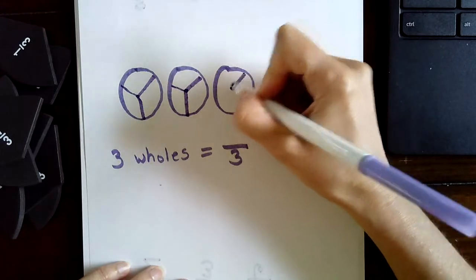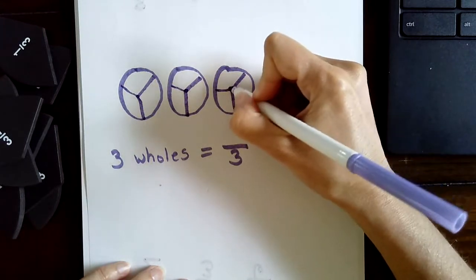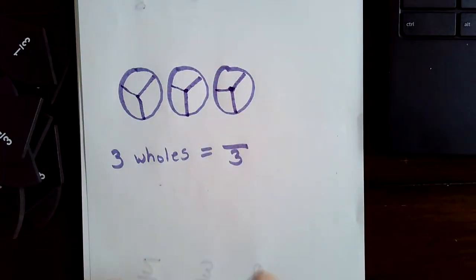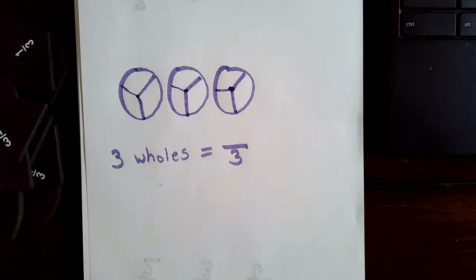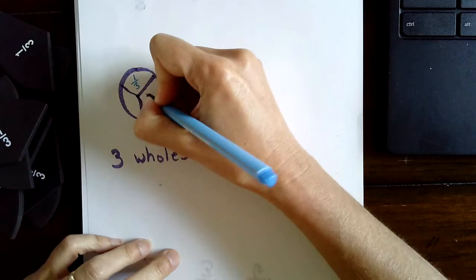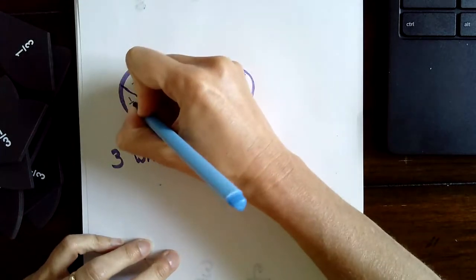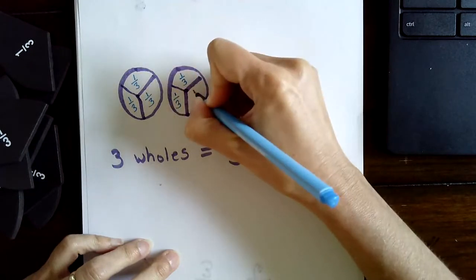Thirds, three equal parts, as close to equal as possible. And if you need to stop and erase some fixtures, you can. And remember, we always label the fractional units. So each piece is going to say one third.